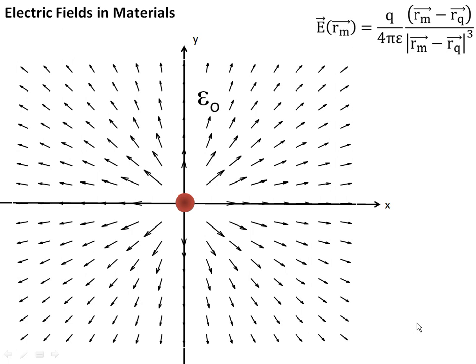We've spent a fair amount of time considering a charge Q in free space. We know that it creates an electric field, which is given by a vector field we call E. At every point in space, we measure it, which is determined by a vector R sub m. We know from Coulomb's Law that the electric field depends on this term epsilon, which we said was a proportionality constant. It relates the actual electric field in MKS units to balance things out.